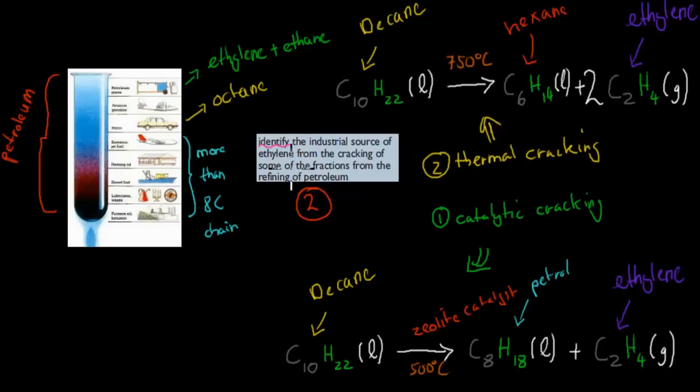For this dot point, it says identify the industrial source of the ethylene from the cracking of some of the fractions of petroleum. Petroleum was just all of this. Petroleum was the whole thing here. And it can be put into its fractions, so its different fractions.